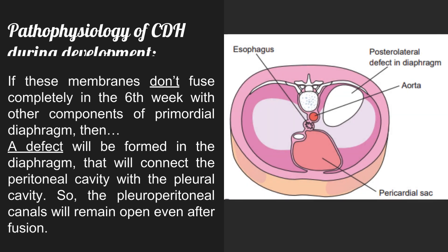In the pathophysiology of CDH during development: if these membranes don't fuse completely in the sixth week with the other components of the primordial diaphragm, then a defect will be formed in the diaphragm that will connect the peritoneal cavity with the pleural cavity. As a result, the pleuroperitoneal canals will remain open even after fusion.